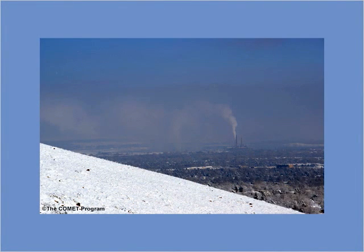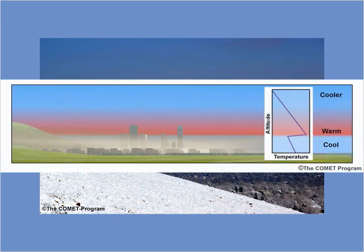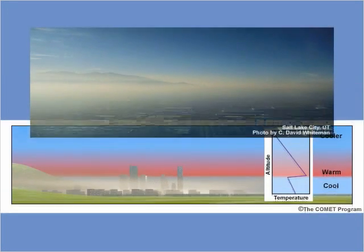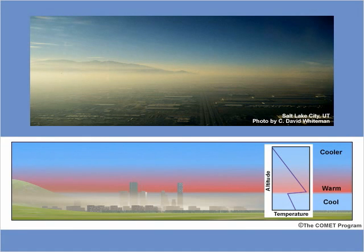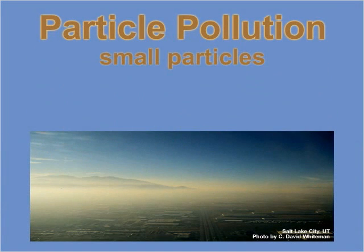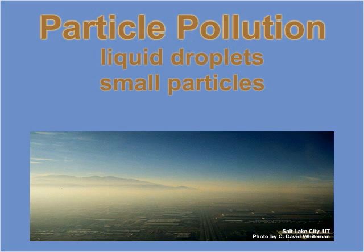Winter weather brings conditions that promote temperature inversions. Whether a thermal inversion is caused by subsidence, radiant heat loss, or advection, it reduces or eliminates convection and leads to a relatively stable, unmixed lower atmosphere. This dome of cold air traps most airborne emissions in the atmospheric layer below the inversion. When this happens in a city with its many sources of air pollution, airborne pollutants known as particle pollution can quickly reach unhealthy levels. Particle pollution is a complex mix of small particles and liquid droplets produced primarily by fossil fuel combustion.